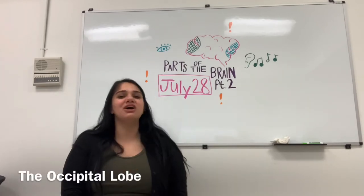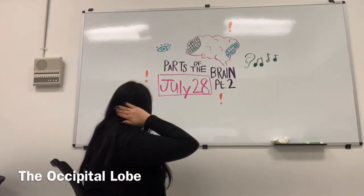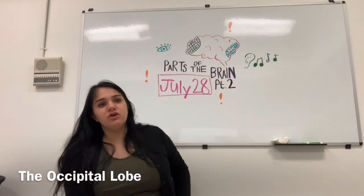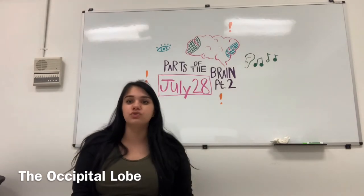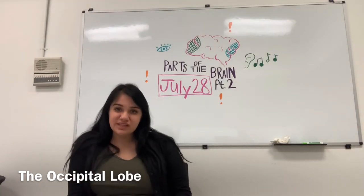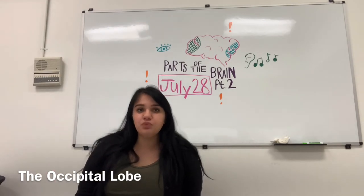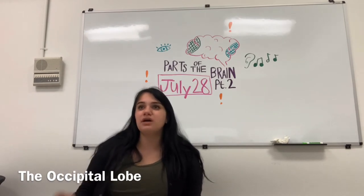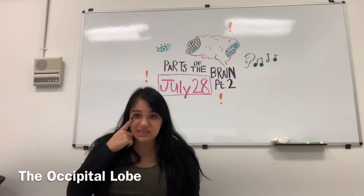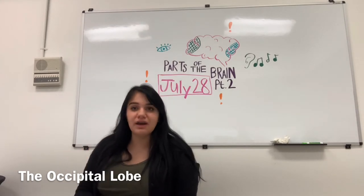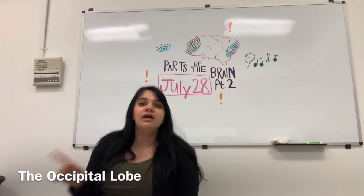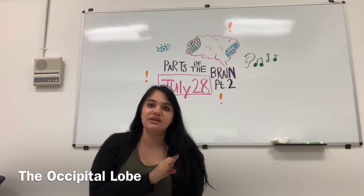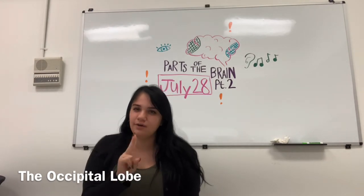Moving on to the occipital lobe. The occipital lobe is in the rear of the head — on my diagram it's this shaded section right here. The occipital lobe does not have as many functions, but it is crucial for our dominant sense, which is eyesight. Our dominant sense as humans is our eyesight, and that's what we rely on most to interpret the world. It's also divided into two lobes — a left and right. The left eye is processed in the right side of the lobe, and the right eye is processed in the left side.